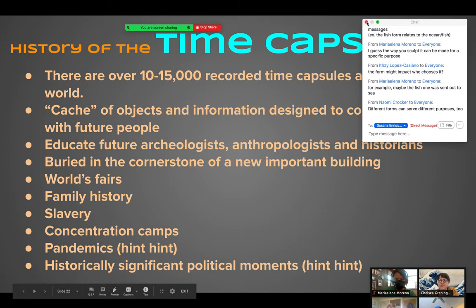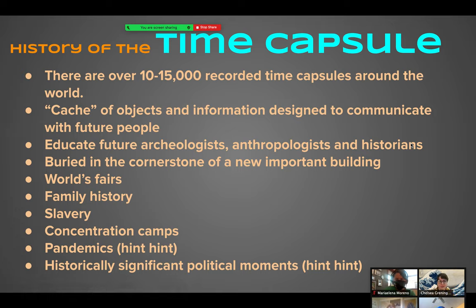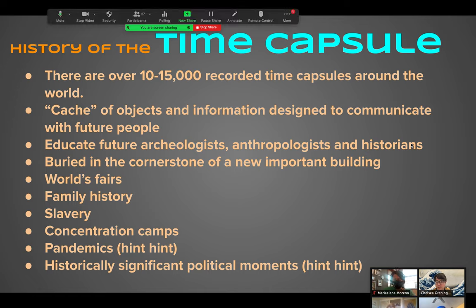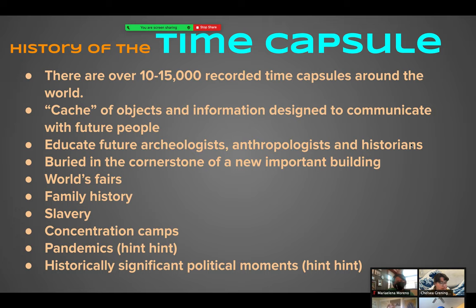A little history of the time capsule: there are over 10 to 15,000 recorded time capsules around the world, and those are just the ones people have sent in records of. A time capsule is really a cache — a contained form with objects and information inside designed to communicate with future people. It can educate future archaeologists, anthropologists, and historians. It's often buried in the cornerstone of a new building — a foundational corner where the capsule is embedded.